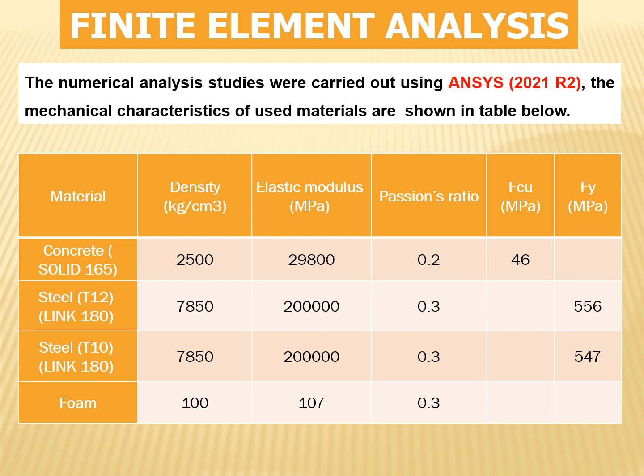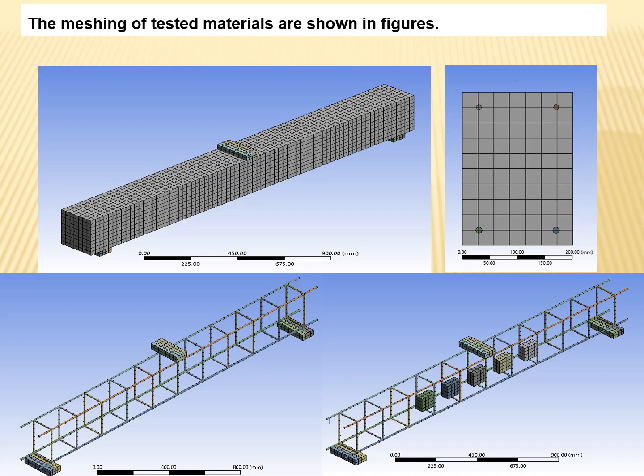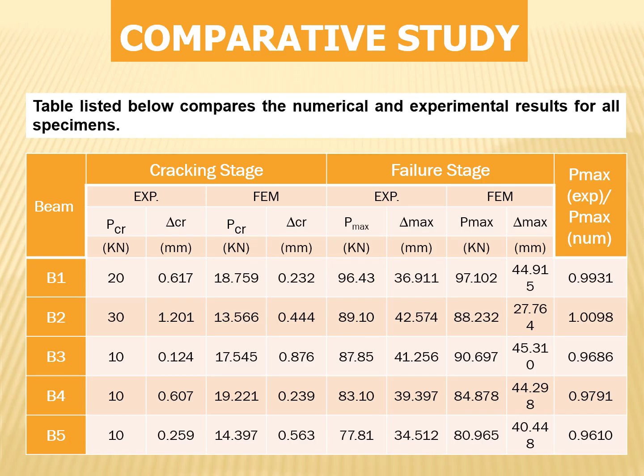The numerical analysis studies were carried out using ANSYS R2. The mechanical characteristics of the used materials are shown in the table below. The meshing of the tested specimens are shown in the figures. The table below compares the numerical and experimental results for all specimens.